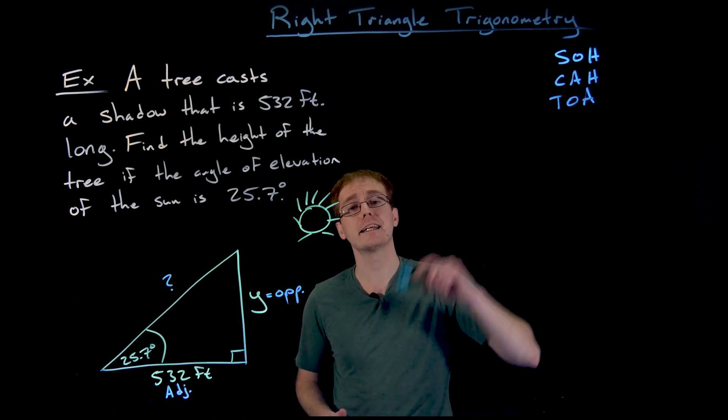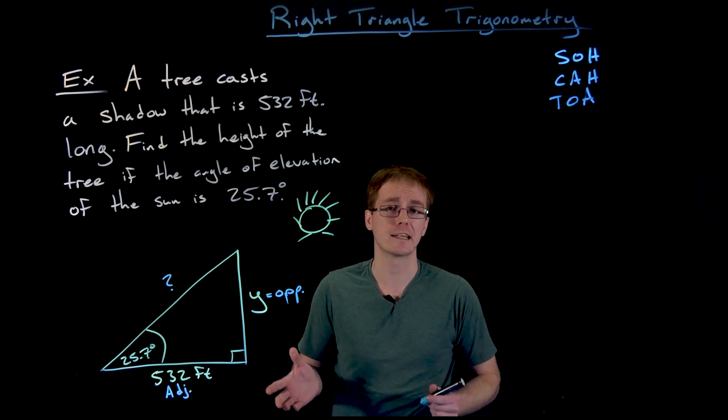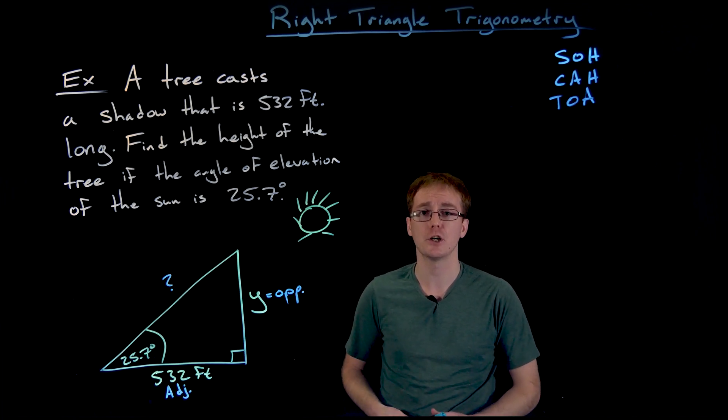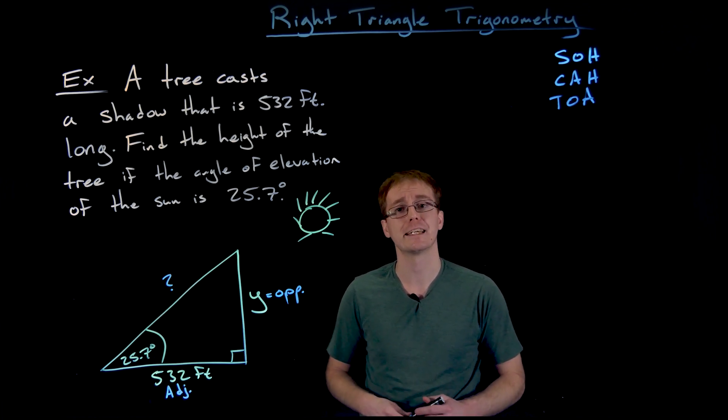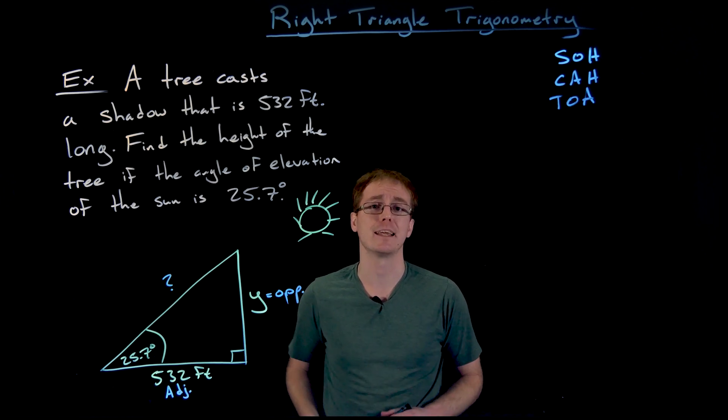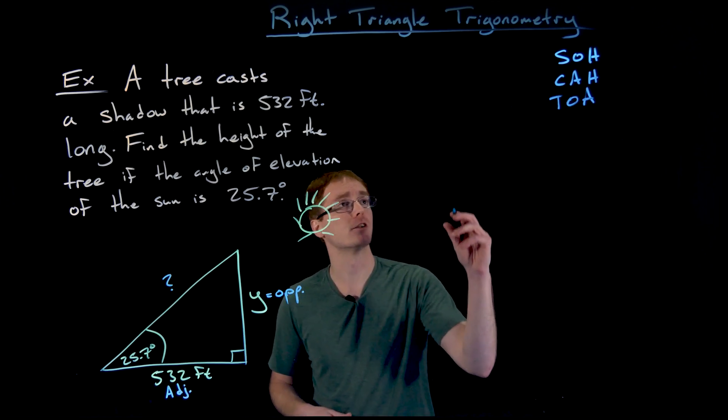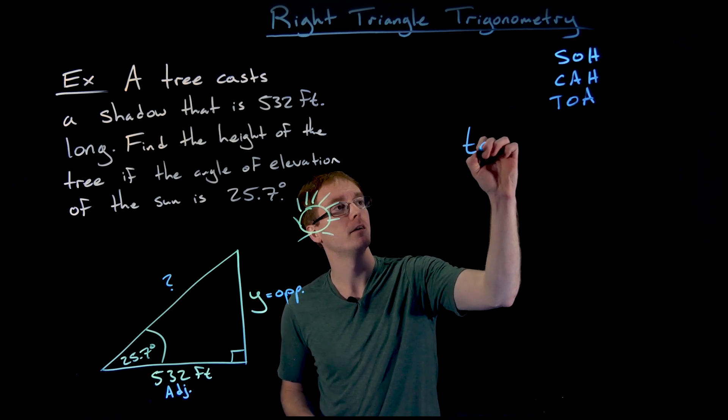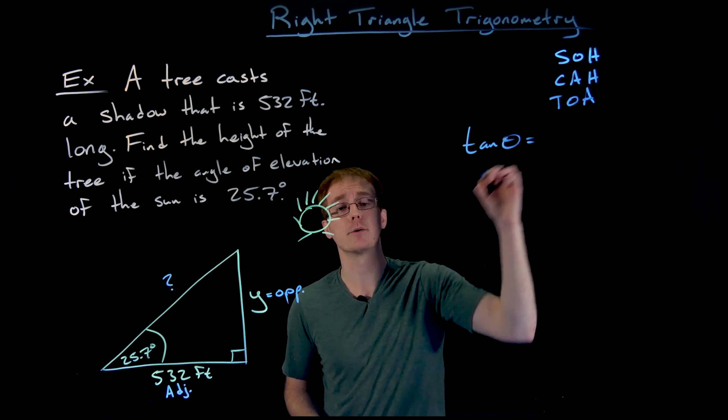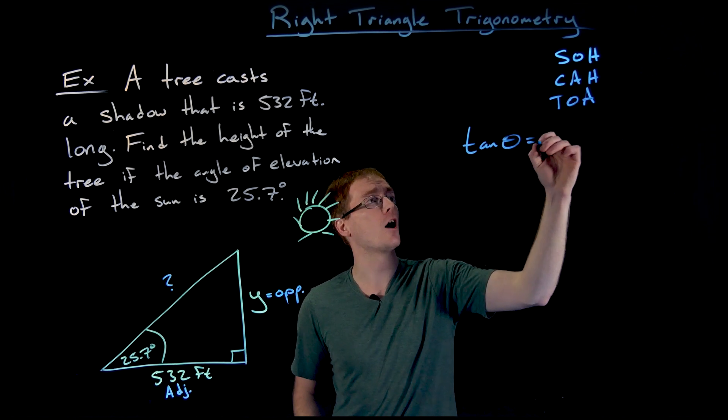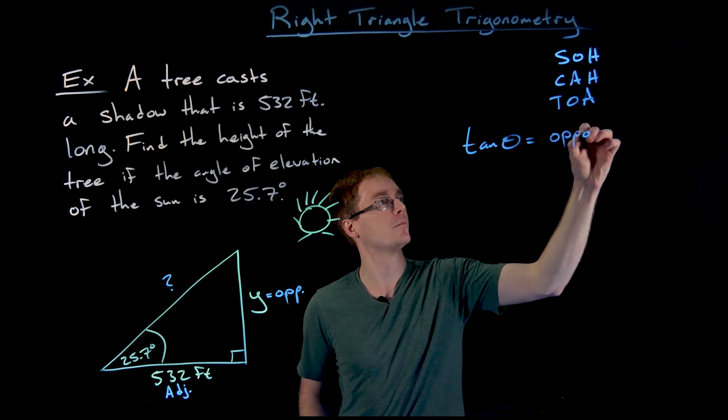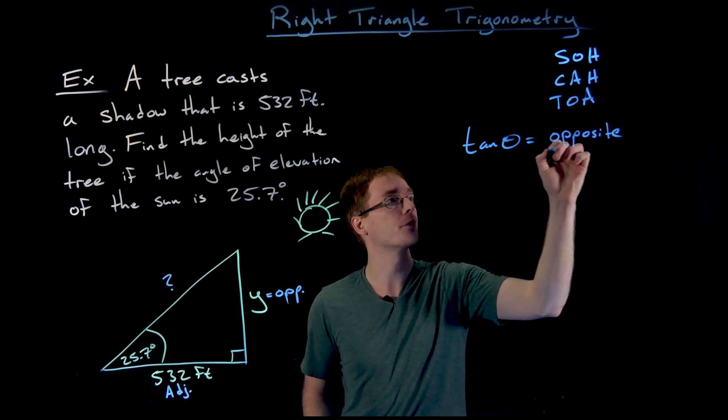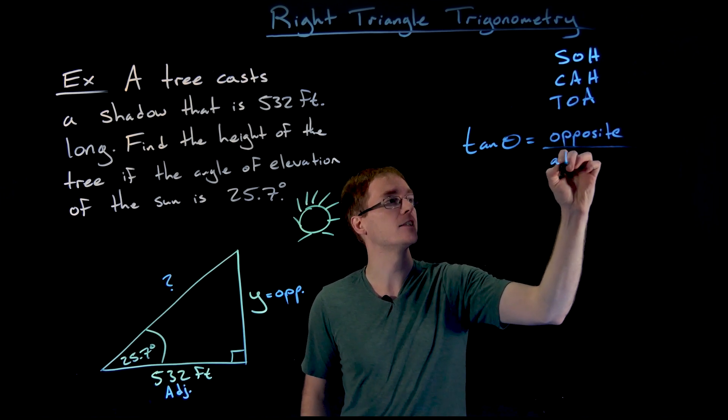So which one of our trig functions or ratios deals with opposite side lengths and adjacent side lengths? Well, that's going to be our tangent function or ratio, or technically our cotangent function or ratio. But we pretty much always prefer tangent over cotangent if we can make that choice. So what we have to remember here is that tangent of our angle theta is always the opposite side length with respect to our angle theta divided by the adjacent side length.